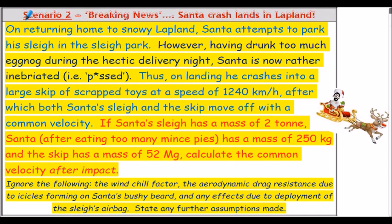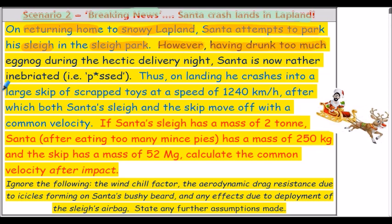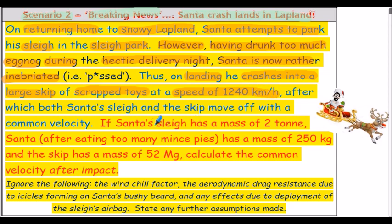Here's scenario two — breaking news: Santa crash lands in Lapland. On returning home to snowy Lapland, Santa attempts to park his sleigh in the sleigh park. However, having drunk too much eggnog during the hectic delivery night, Santa is now rather inebriated. Thus on landing, he crashes into a large skip full of scrap toys at a speed of 1,240 kilometres per hour, after which both Santa's sleigh and the skip move off with a common velocity.